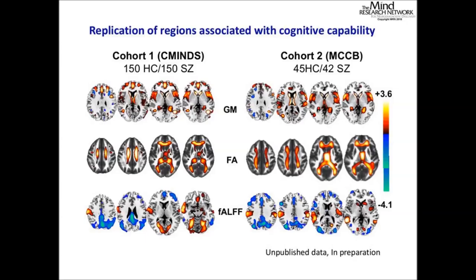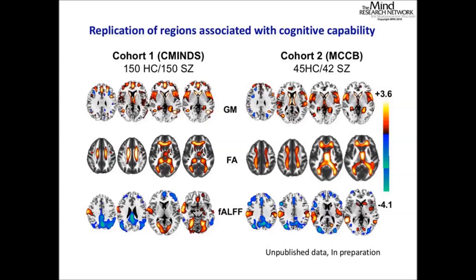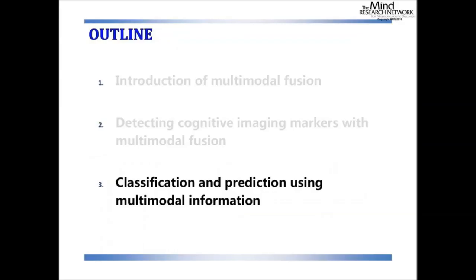Comparing the two datasets: structural and DTI results show high consistency, while fMRI results are slightly different — possibly because C-MITES does not include the social cognition task. The top two correlated domains per modality show that the salience network and executive control network are identified in structure, and these networks are highly correlated with attention and verbal learning domains.